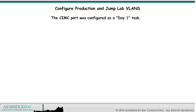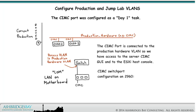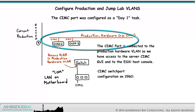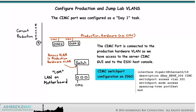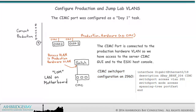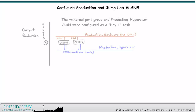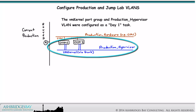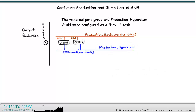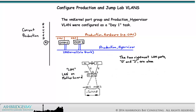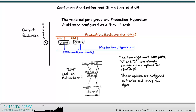The SIMC port was configured as a Day 1 task. The SIMC port is connected to the production hardware VLAN, so we have access to the server SIMC GUI and to the ESXi host console. Here is the SIMC port configuration on the upstream 2960 from Day 1. The VM kernel port group and production hypervisor VLAN were configured as a Day 1 task. Our ESXi host will be on the production hypervisor VLAN. The two LOM ports 0 and 1 are the uplinks for V-switch 0. These uplinks are configured as trunks and carry the hypervisor VLAN.